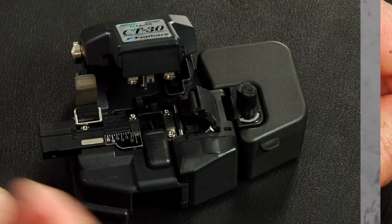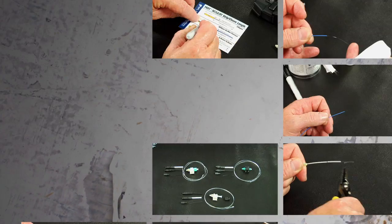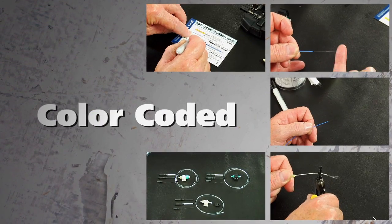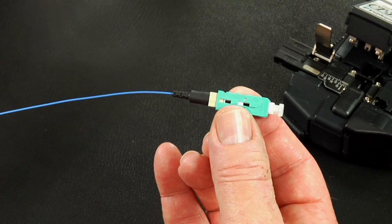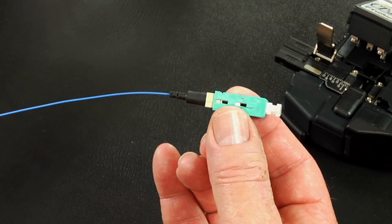Fast connectors provide an immediate termination to both single mode or multi-mode fibers and are color-coded for ease of fiber identification. This video will guide the user through the steps required to properly terminate the fast SC connectors.